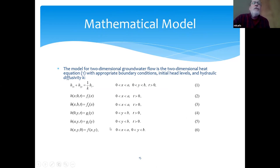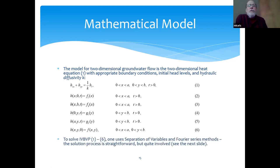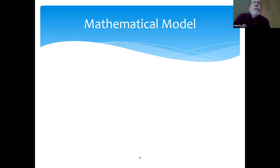This is an initial value boundary value problem. To solve problem 1 through 6, one uses separation of variables and Fourier series methods. The solution process is straightforward but quite involved, so I'm just going to give you the solution on the next slide.